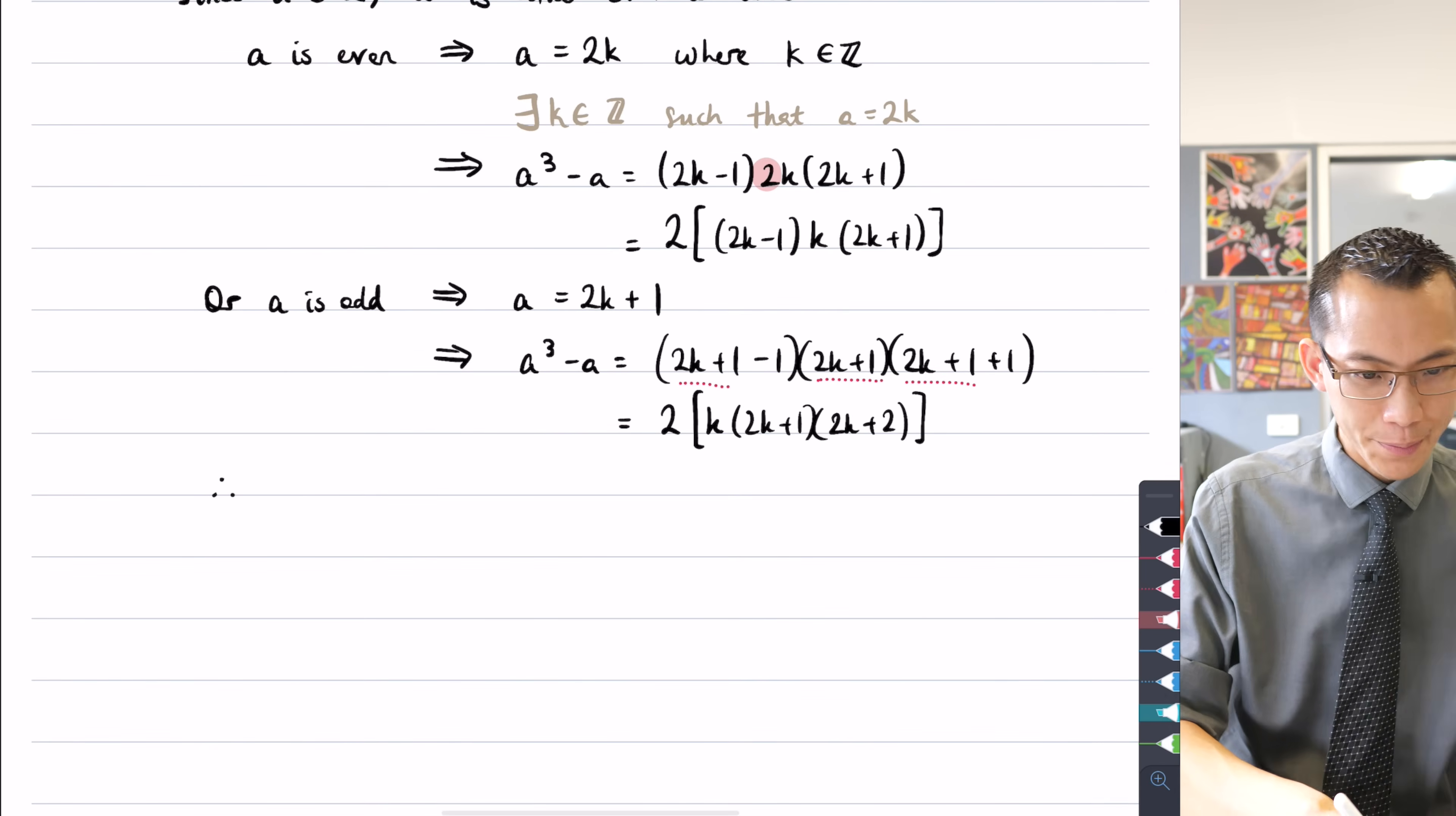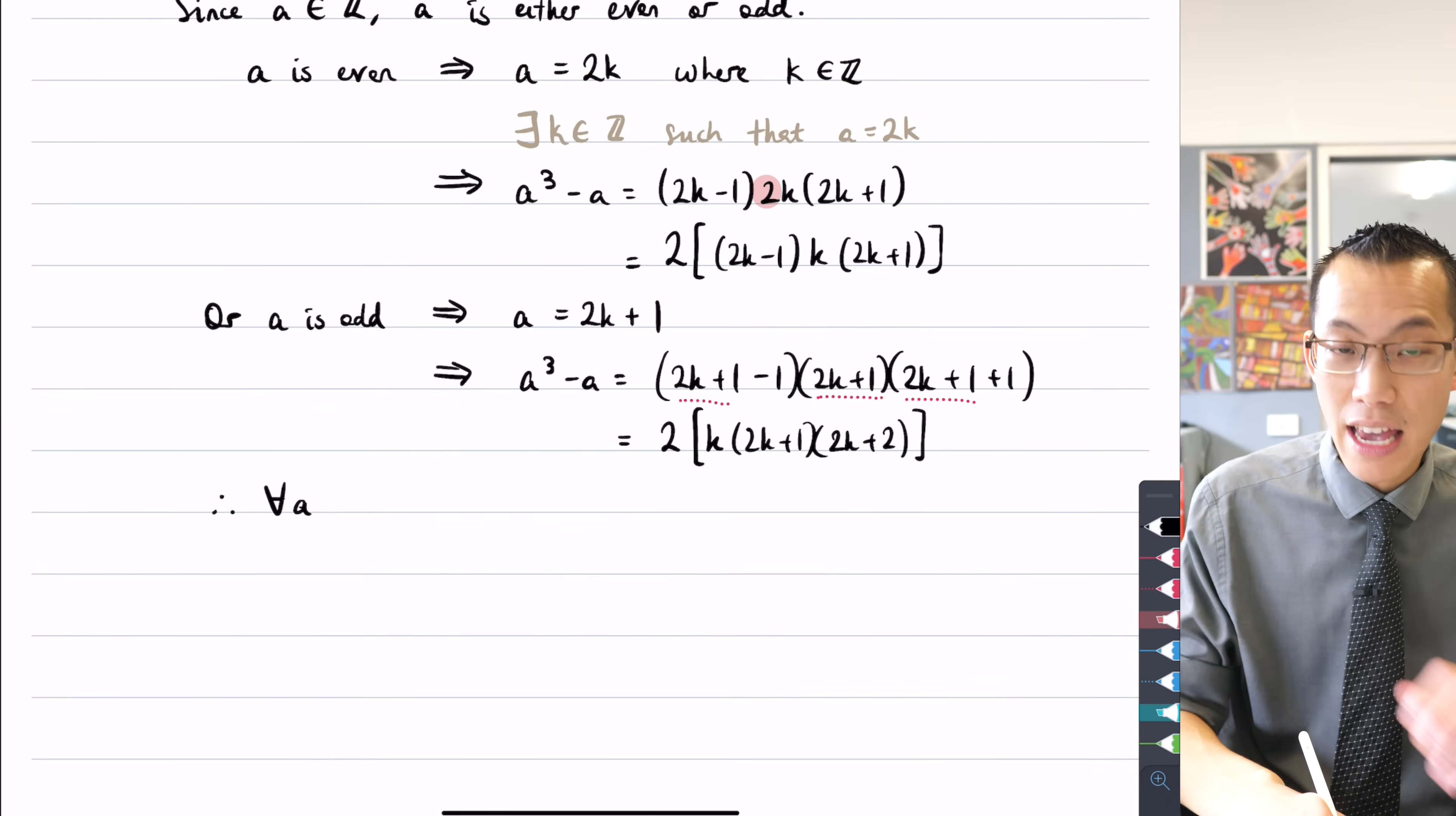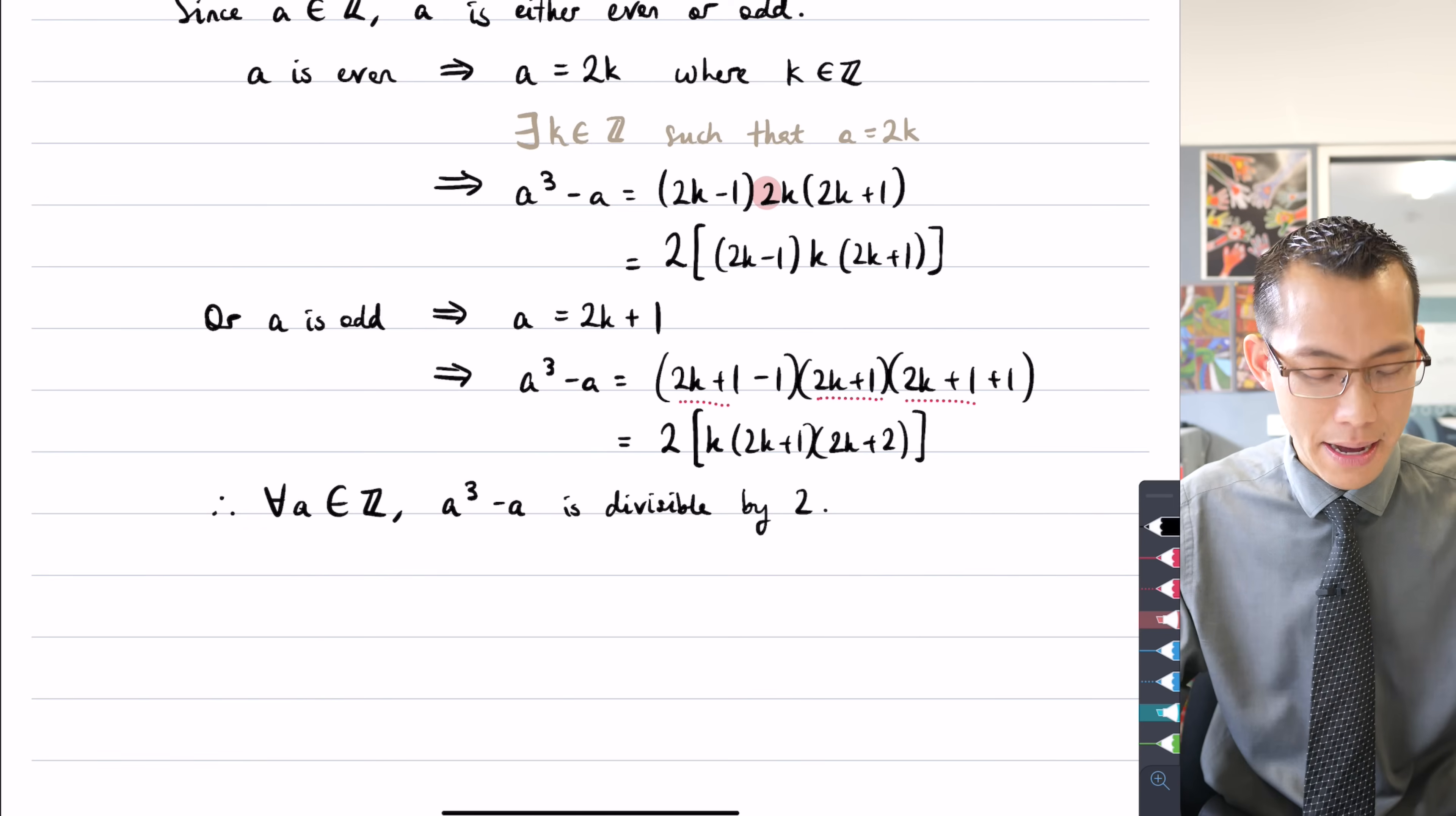I can now say therefore, for all values of a, because I've covered exhaustively, this is why it's called proof by exhaustion, I've covered all of the cases. There's only two in this case. I've covered the even case for a, covered the odd case. So now I can say for all values of a that are integers, a³ - a is divisible by two. So I've handled that part of things. In order to get to the end, I want a³ - a to also be divisible by three. Now how do I go about this?